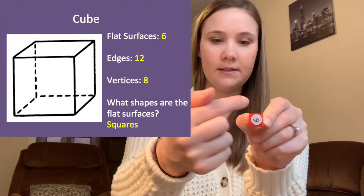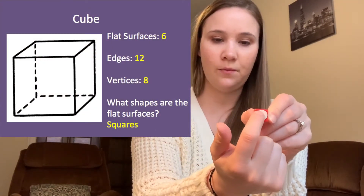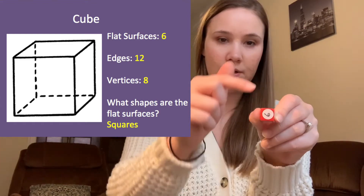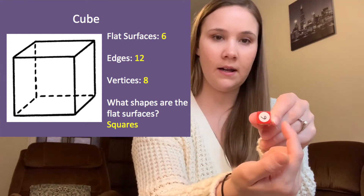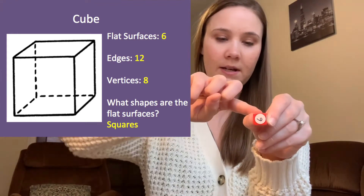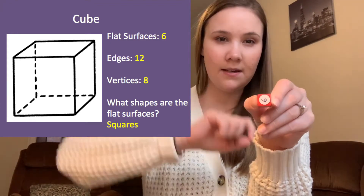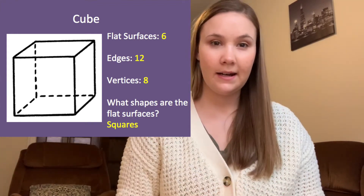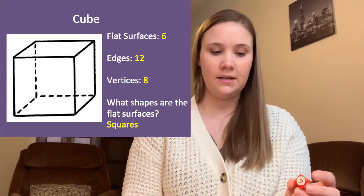Let's do a cube — this one is a little bit harder. Let's count the flat surfaces. I like to start at the front and work my way back. On the front — that's one flat surface — two, three, four, five, and the one on the back makes six flat surfaces.